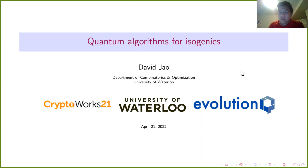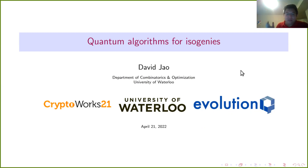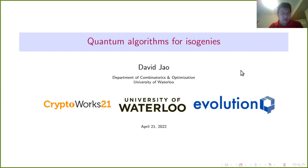Today I'm going to talk about quantum algorithms for isogenies. Nothing I will say today is new in the sense of research — I'm just trying to bring together existing known facts so we can have them all in one place and make more progress on quantum algorithms for isogenies and related computational topics. The current state of the art for quantum algorithms is not great as far as it goes for isogenies; I think there's a lot of work to be done.